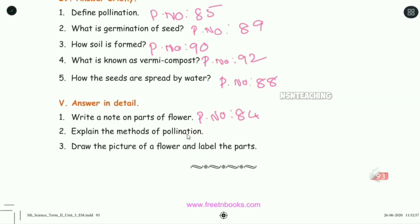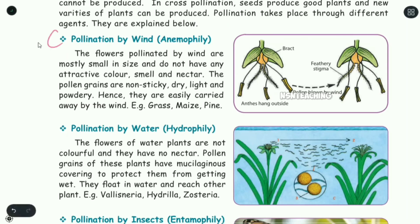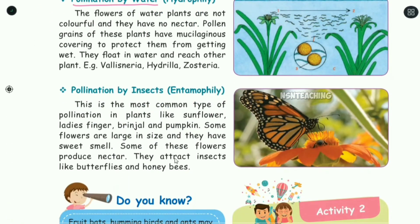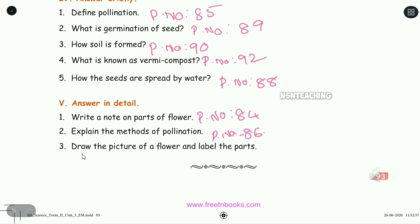Explain the methods of pollination — page number 86. There are pollination by wind and insects, pollination by water, and pollination by insects including bees. That is the second detail.